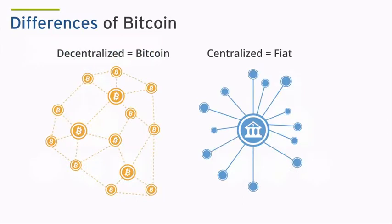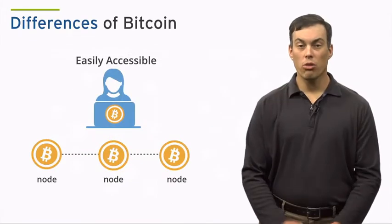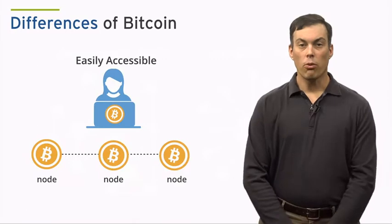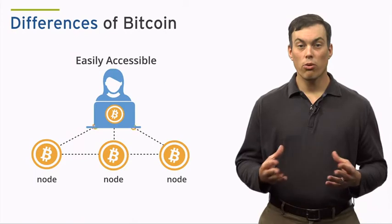Bitcoin is different from traditional fiat or government-sponsored currency in a variety of ways. The first is that it is decentralized, meaning there is no central authority controlling the currency's issuance. The second difference is that accessing the Bitcoin network is relatively easy. Anyone with a laptop or computer can become a node on the Bitcoin network and begin sending transactions through it.